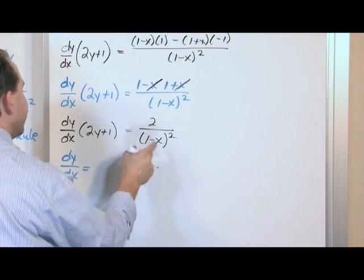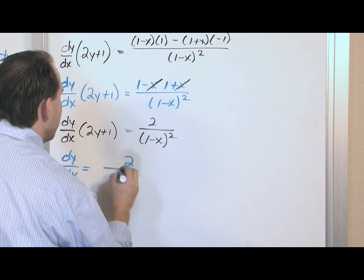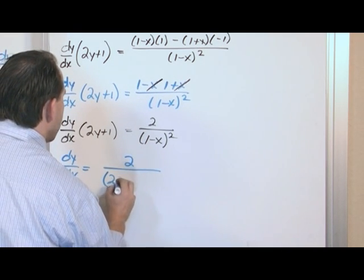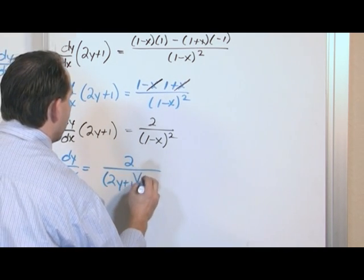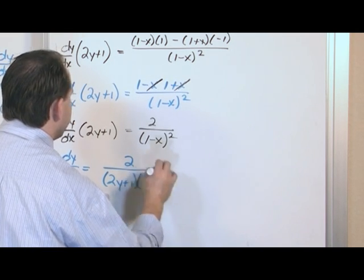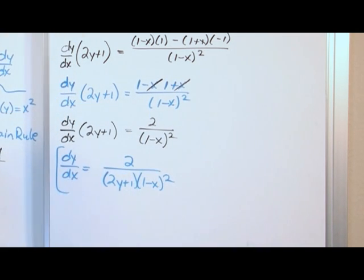And we're dividing here. So what we're going to have is 2 over 2y plus 1, 1 minus x squared. And that's the answer. 2 over 1 minus x squared times 2y plus 1, which is exactly the answer.